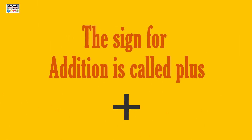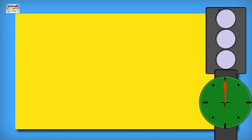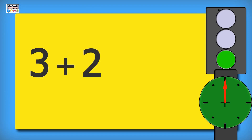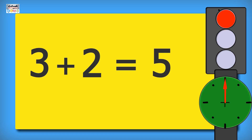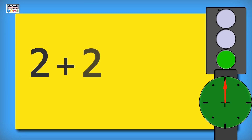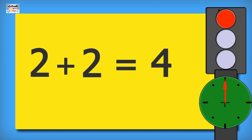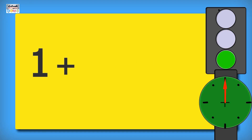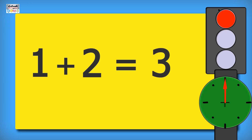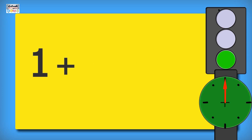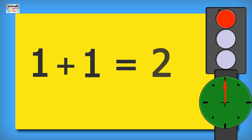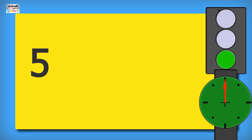Let's learn basic addition. The sign for addition is called plus. Three plus two is equal to five. Two plus two is equal to four. One plus two is equal to three. One plus one is equal to two.